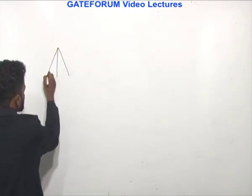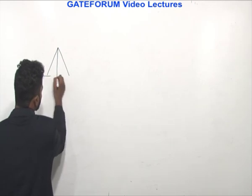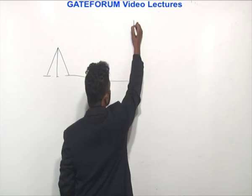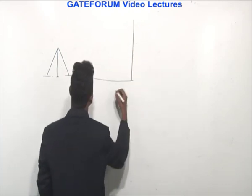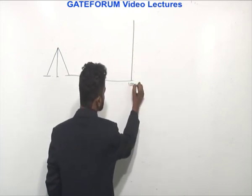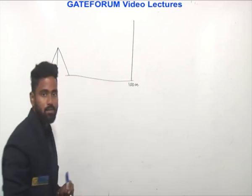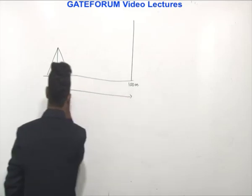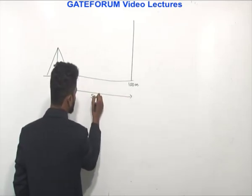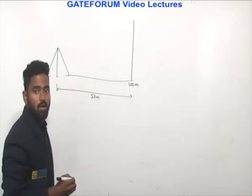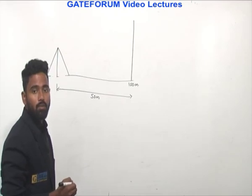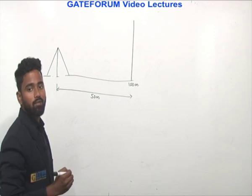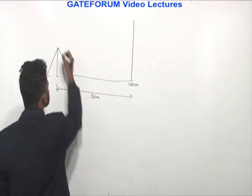A theodolite is kept and readings are taken on a benchmark. The RL of the benchmark is 100 meters, and the theodolite is at a distance of 50 meters from it. The measured vertical angles from the horizontal at the staff readings are found to be the same.